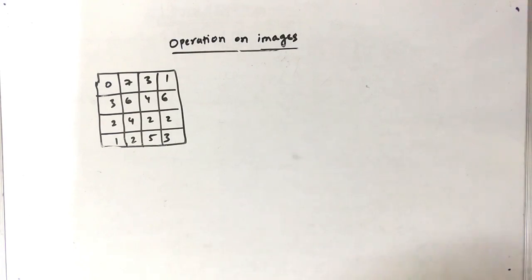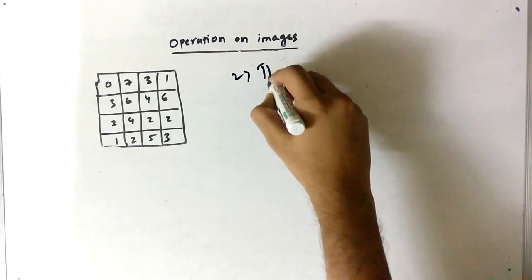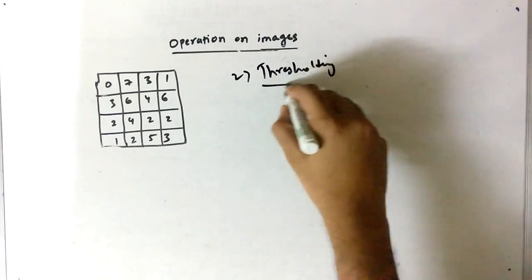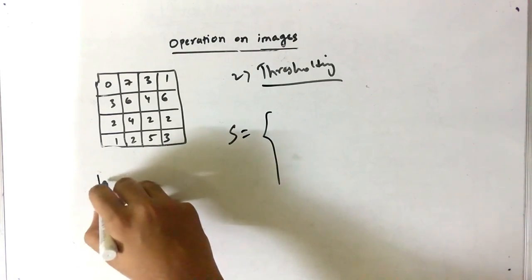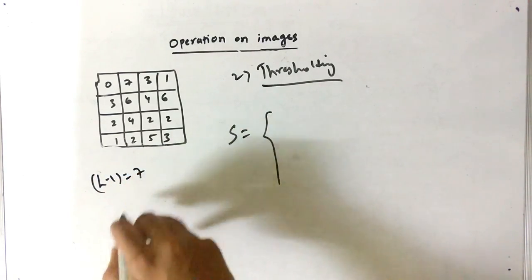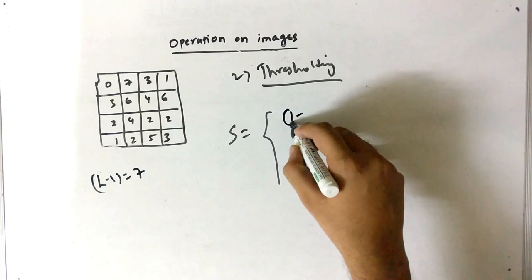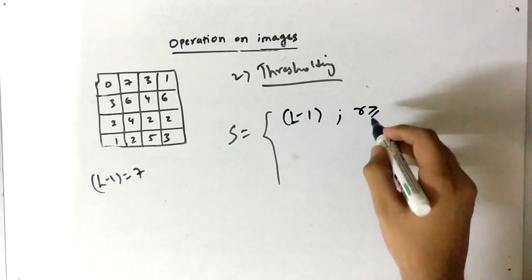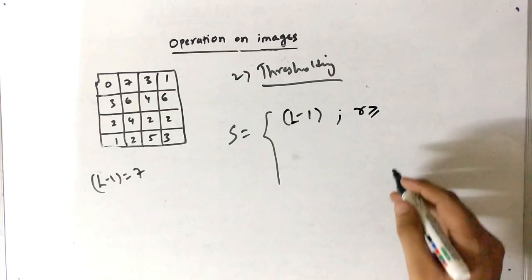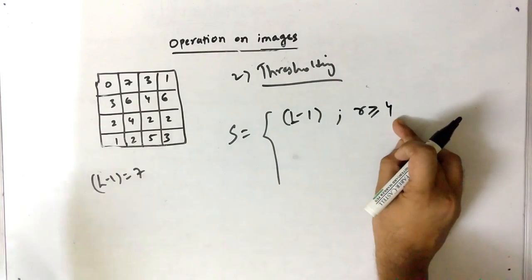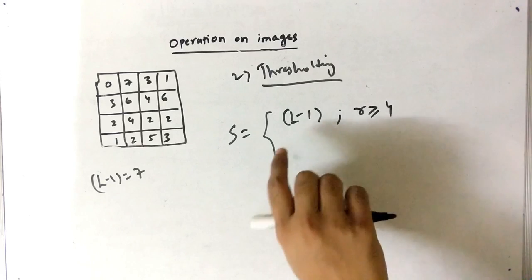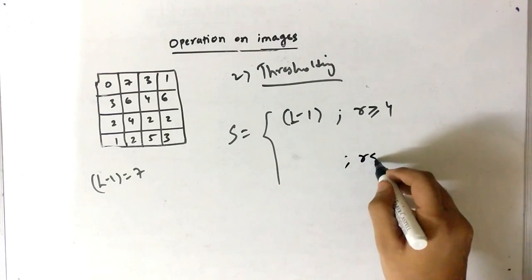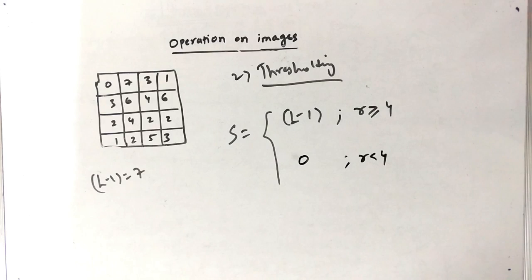The second operation is thresholding. Thresholding is very simple — the output can be maximum or minimum. Since the maximum, L minus 1, is 7, the threshold point is, say, 4. If R is greater than or equal to 4, the output should be maximum (7). Otherwise, when R is less than 4, the output should be minimum, which is 0.